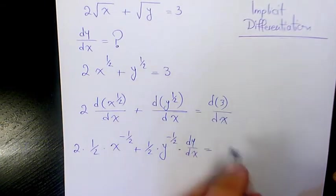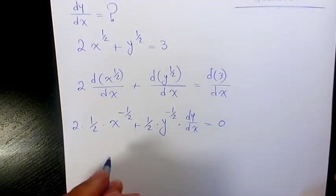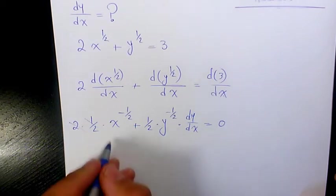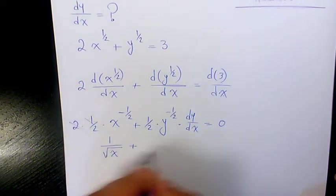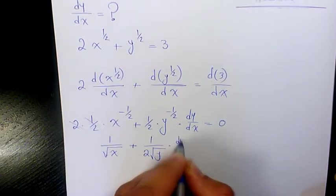So right now these 2 and 1/2 cancel out, and we're going to have 1/√x plus 1/(2√y) times dy/dx equals to zero.